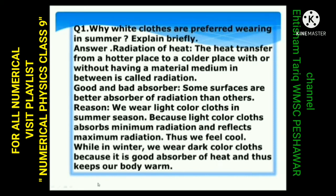ہم گرمیوں میں white clothes کیوں پہنتے ہیں؟ ہم نے اس چیپٹر میں پڑھا ہے کہ کچھ objects radiation absorb کرتے ہیں اور کچھ reflect کرتے ہیں۔ Dark bodies زیادہ تر radiation absorb کرتی ہیں۔ White color ہمیں اس لیے white نظر آتا ہے کہ یہ sun کی تمام radiation اور تمام colors کو reflect کرتا ہے، اور جب تمام colors مل جاتے ہیں تو white color بنتا ہے۔ گرمیوں میں ہم white clothes اس لیے پہنتے ہیں کہ یہ sun کی تمام radiation کو reflect کرتا ہے اور ہمیں اتنی گرمی محسوس نہیں ہوتی۔